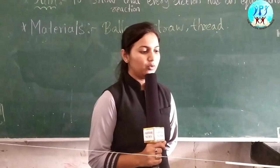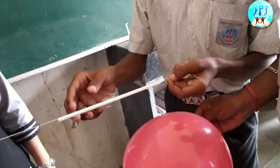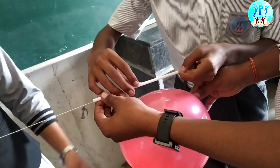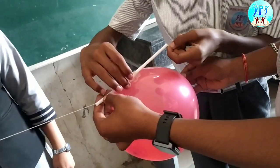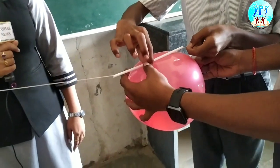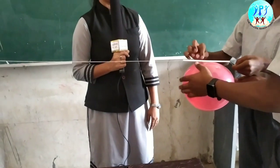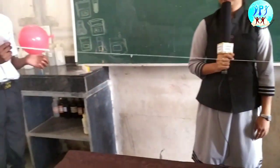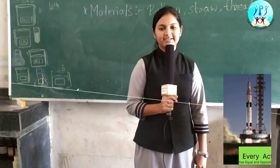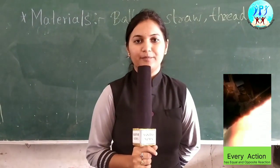First, take a balloon, blow it, and stick it with the straw. Put the straw through the thread and release the gas from one side — the balloon will move to the other side. If we release the gas from the left side, the balloon will move to the right side.